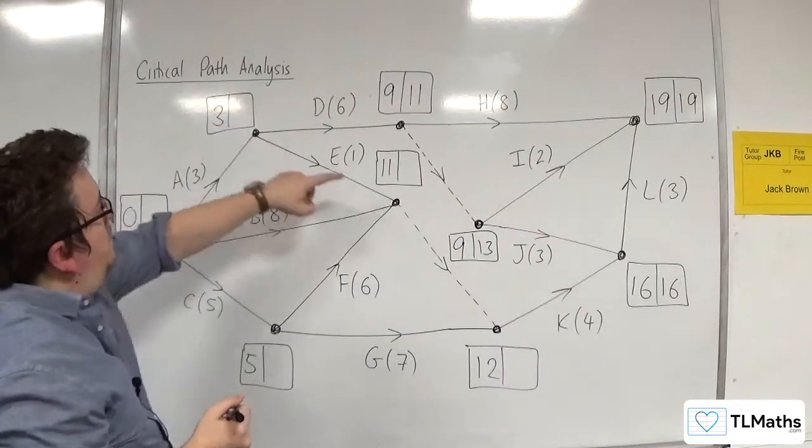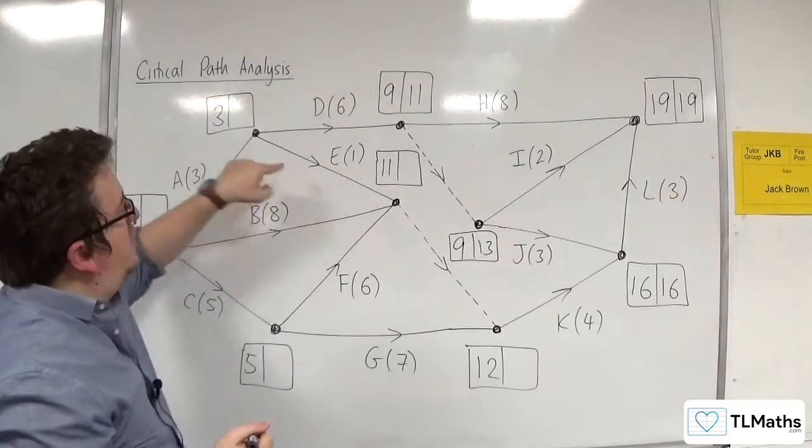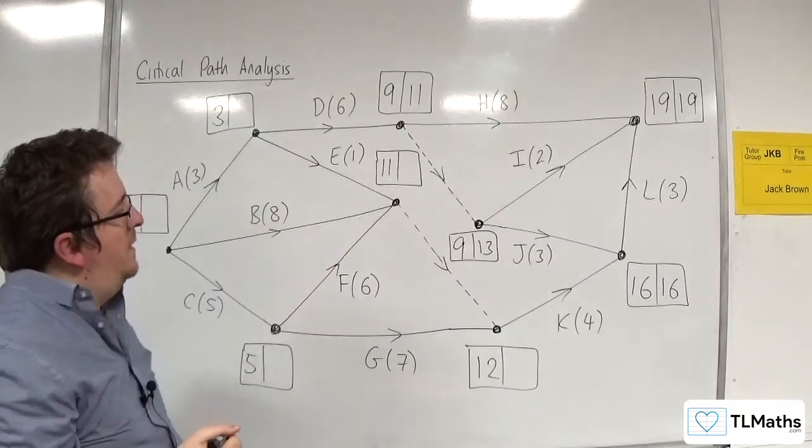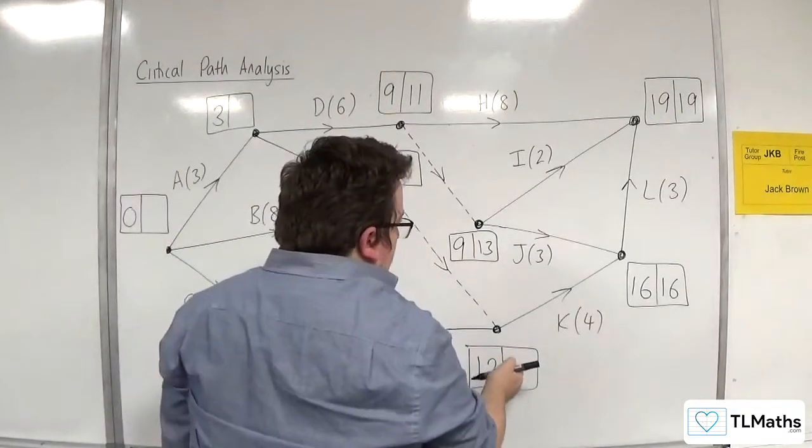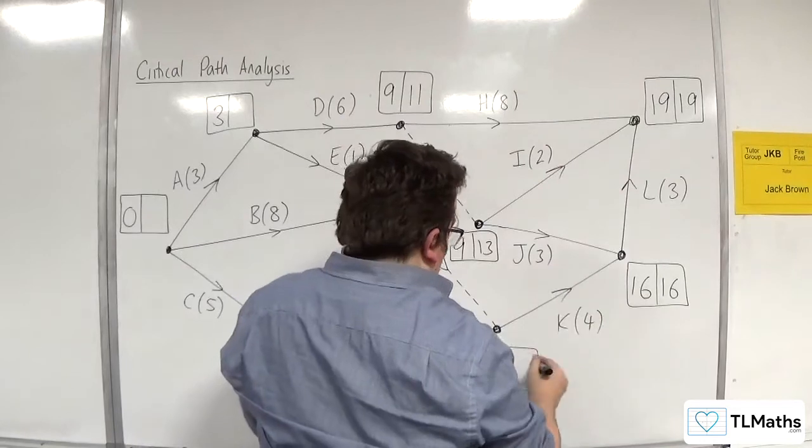Now we can't do this one because there's another route back, and we don't know what that value is there. So I'm going to have to go down here now. 16 take away 4 is 12.